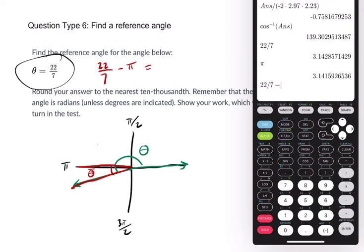So 22/7 minus pi. And there's our angle. I think I asked for this in ten-thousandths.